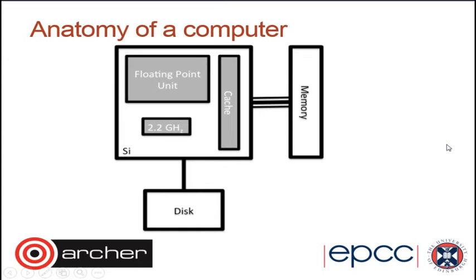As we'll come to talk about, for most scientific programs, the speed of the processor is not the thing that really affects your performance. It's generally the speed of the memory that you're using — not for all programs, but for most of them.